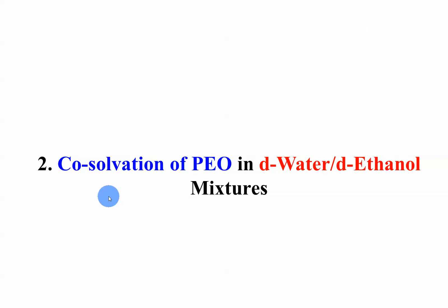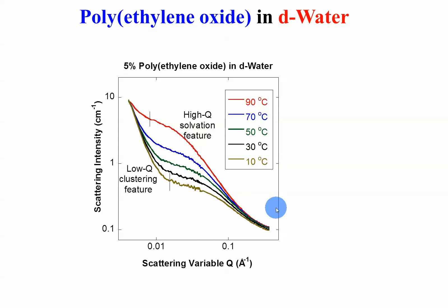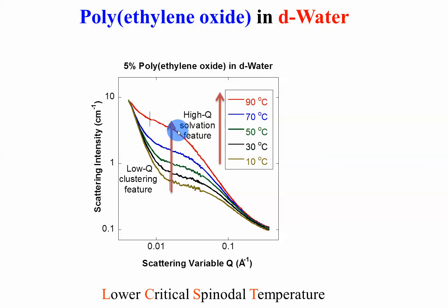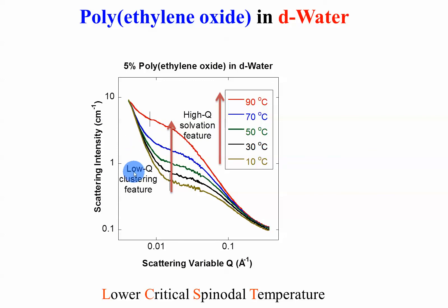Co-solvation of PEO, polyethylene oxide, in solvent mixtures. First, in pure water: when you heat up, you see the intensity goes up — this is a lower critical solution temperature, or spinodal temperature. We see two features: the high-Q solvation feature, and also a low-Q clustering feature, which characterizes most water-soluble polyethylene oxide. These clusters are not perfectly understood, but we have some ideas about what causes them.